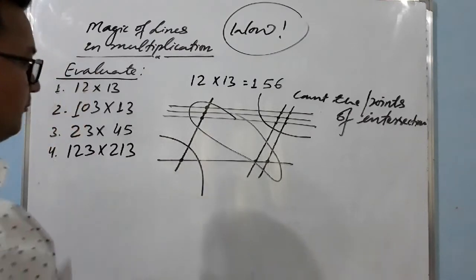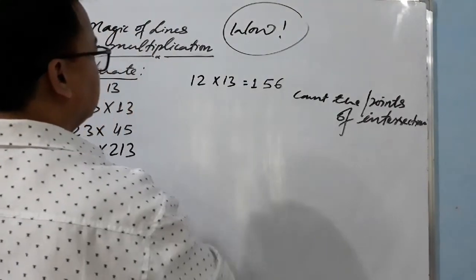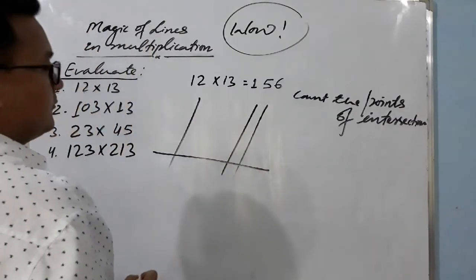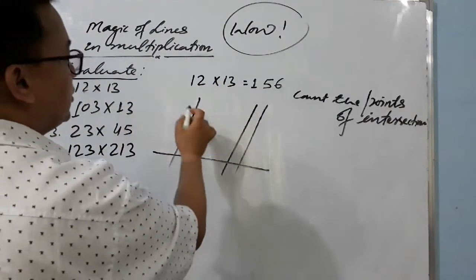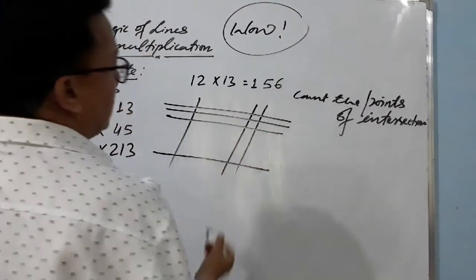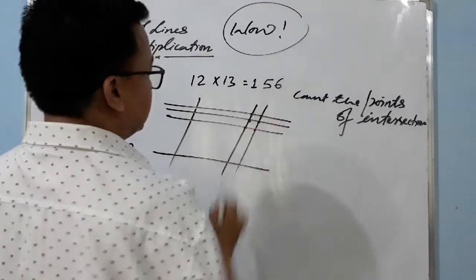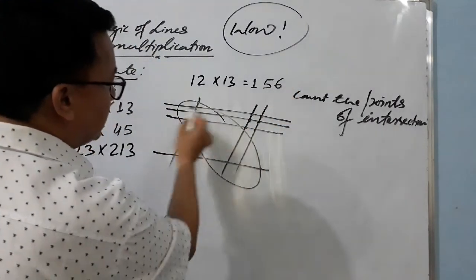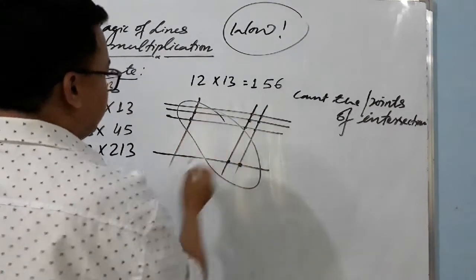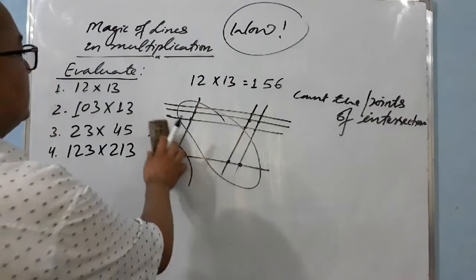Let me show it once again quickly. Draw one, then two lines with some space; from the bottom, start one line for '1', then three lines for '3'. Count the points: one, two, three, four, five, six — six. Then the diagonal: one, two, three, four, five — five. And this side: only one. So we get 156.